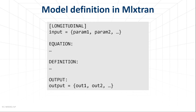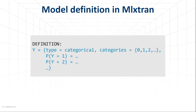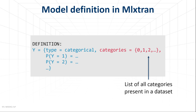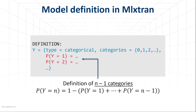Now let's look at how to implement models for categorical data in MLxtran. This must be done in the definition section of the structural model and has a specific structure. First, with the option type, we state that the model is categorical and not count or time-to-event. Then we define the list of all categories used in the datasets loaded in Monolix. Finally, we define probabilities for n-1 categories; the last category is defined implicitly from the assumption that all probabilities sum to 1.